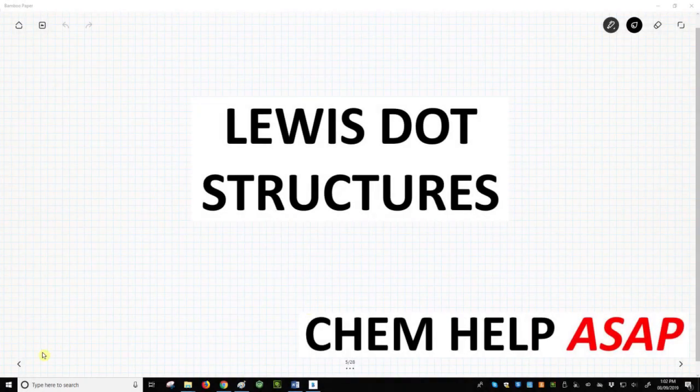Welcome to Chem Help ASAP. One of the most common methods for communicating organic structures is through Lewis dot structures. Let's learn how to draw Lewis dot structures and see how the octet rule is highly relevant to these pictures.